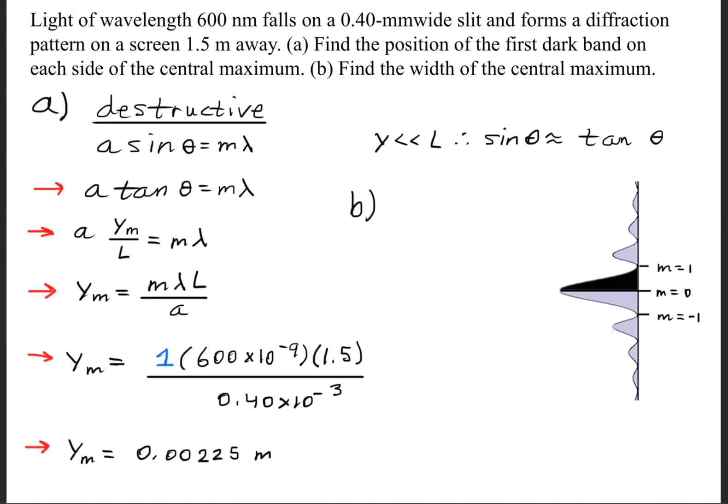Take a look at this diagram. This is what a typical single slit diffraction pattern looks like. We have the central maximum at m equals 0, and the dark bands or dark fringes at m equals 1 and m equals negative 1.